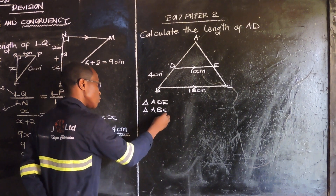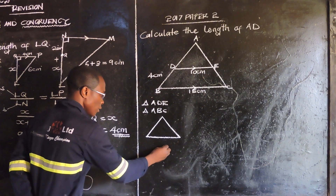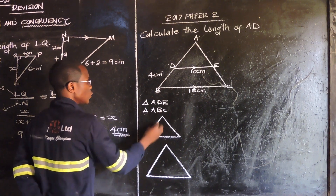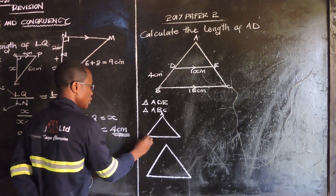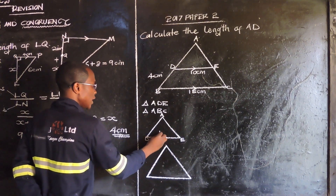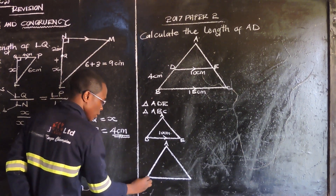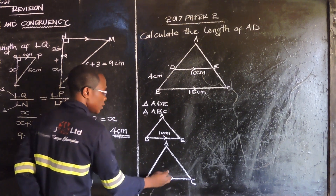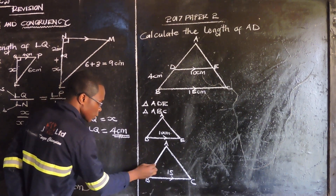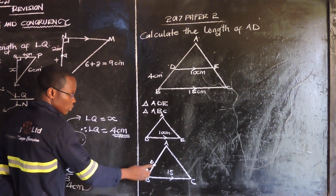So I would draw a small triangle like this: A at the top, then D, then E. DE is 10 centimeters. Then the big triangle: A at the top, then B, then C. BC is 15 centimeters. Point D is also on side AB of the big triangle, and from B to D it's 4 centimeters.